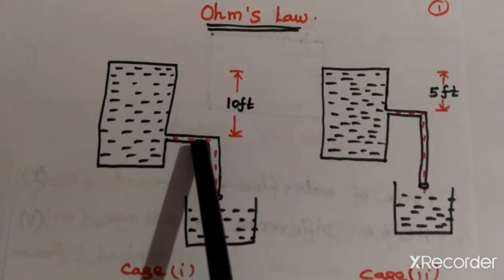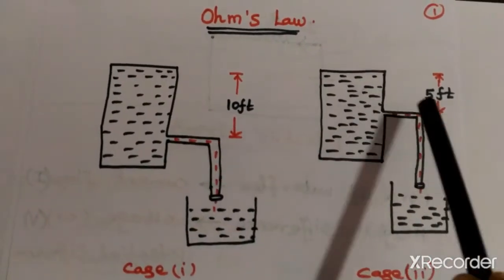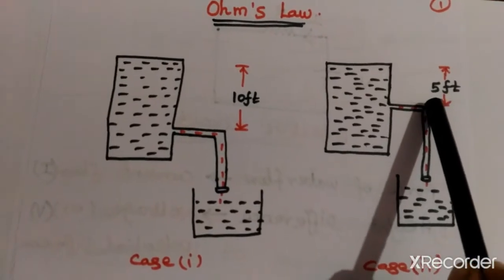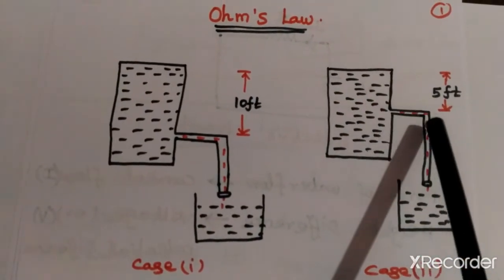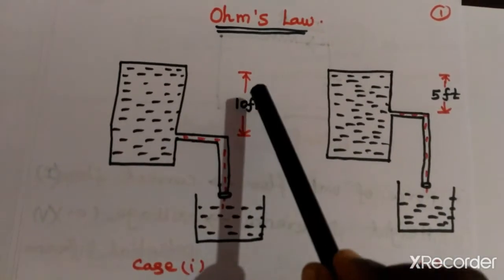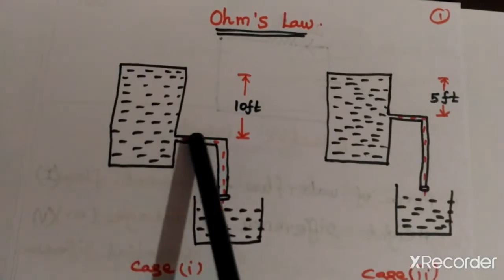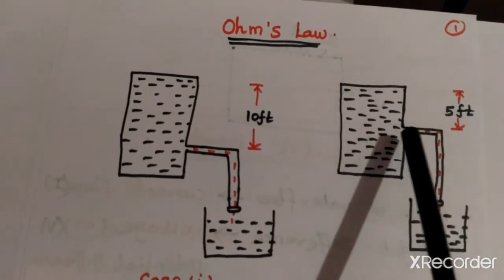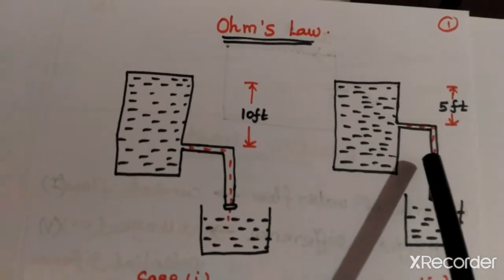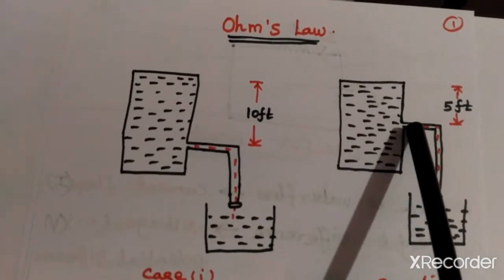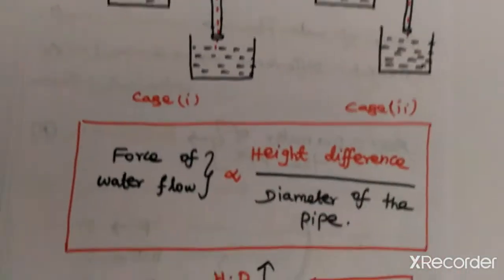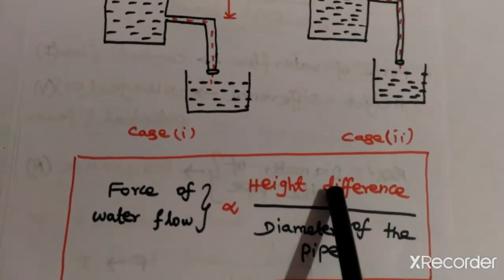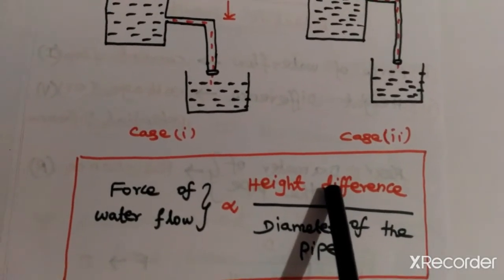Consider the first diagram: the height difference between the top of the tank and the pipe is 10 feet. If I decrease the height difference to 5 feet as shown in the second diagram, the force of water flowing through the pipe also decreases. Conversely, if I increase the height, the force increases. So the force of water flow is directly proportional to the height difference.